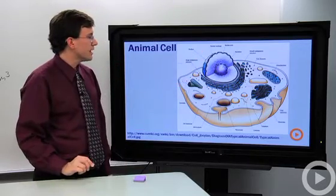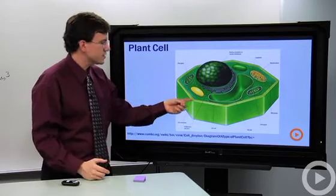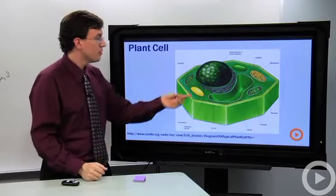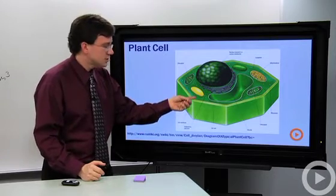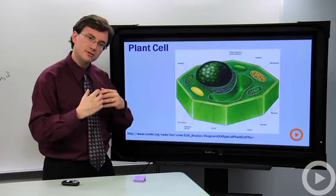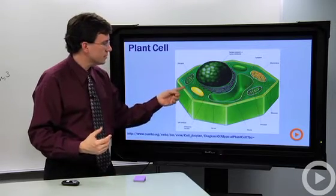If we take a look at a plant cell, we see again a similar structure. We see that cell wall that gives the shape and structure and protection for the plant cell, just like it helped protect the bacteria. We see the membrane immediately underneath that.